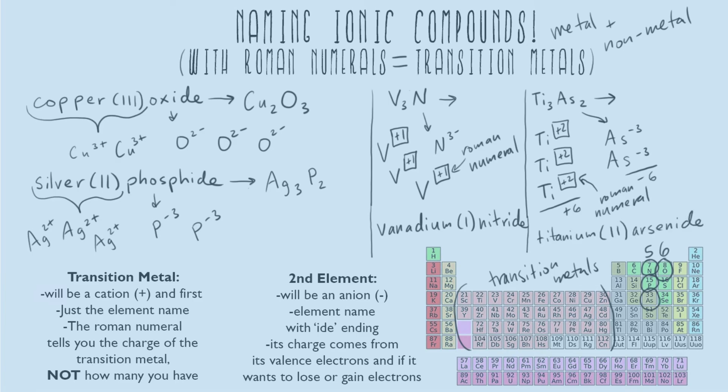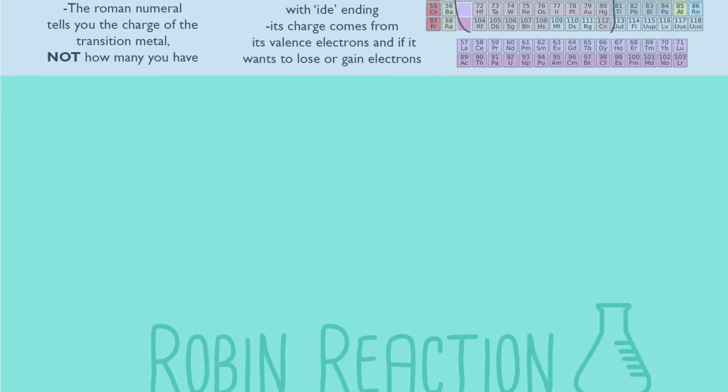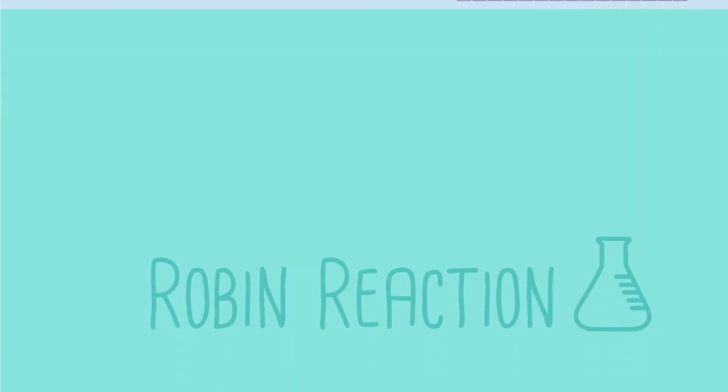I hope that helped you with naming ionic compounds that have Roman numerals. Remember, all that means is that you have transition metals. Good luck, and I promise after you do a few of those practice problems it'll get easier. Bye-bye.